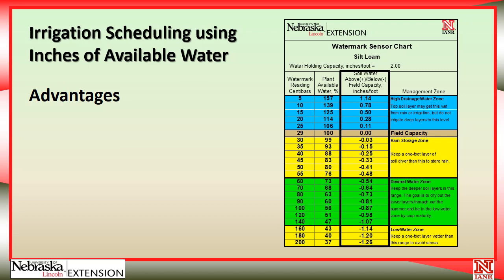If you were below field capacity and had a reading of 70, then you would have a negative 0.64 inches. What that means is that you would have to add back 0.64 inches of water to that one-foot layer of soil to bring it back up to field capacity.